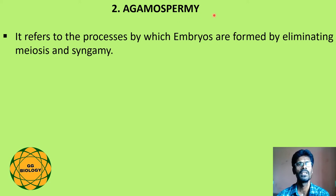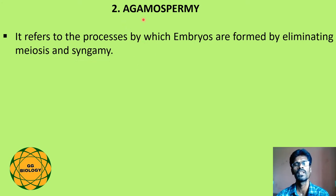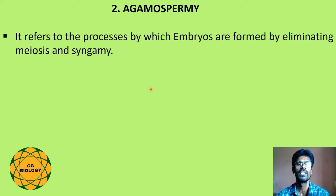The second type of recurrent apomyxis is agamospermy — a process by which embryos are formed by eliminating meiosis and syngamy. There is no meiotic cell division and no fusion of gametes. Agamospermy is broadly divided into three types: adventive embryony, diplospory, and apospory.